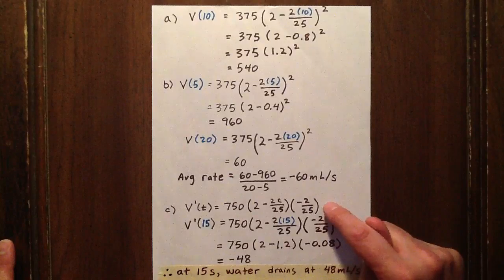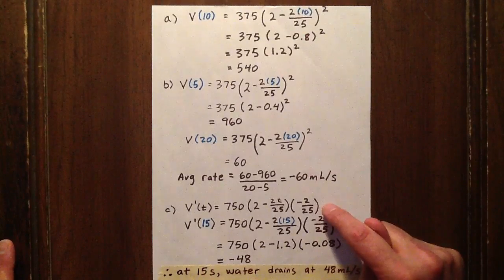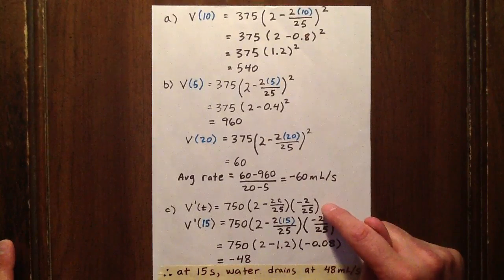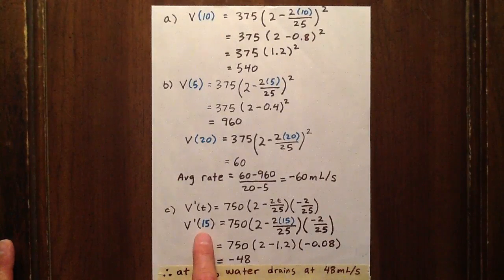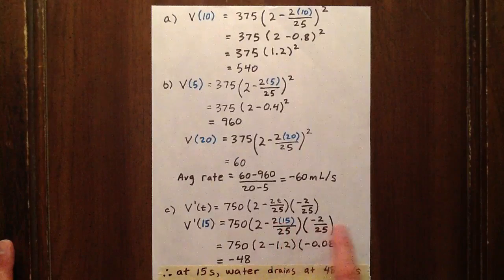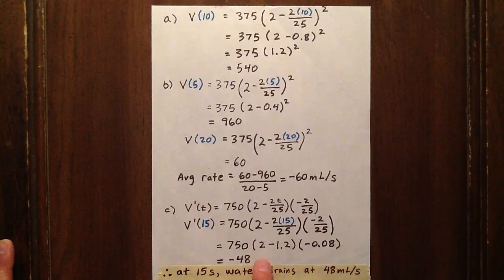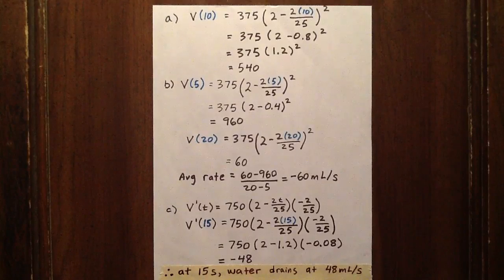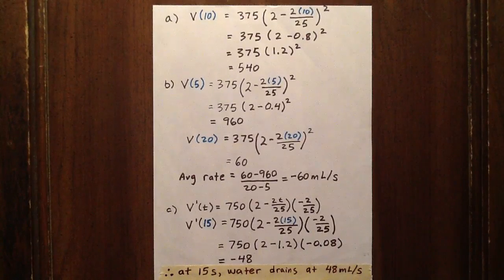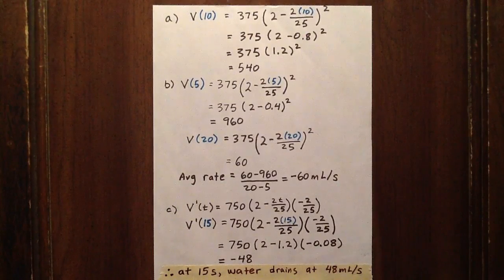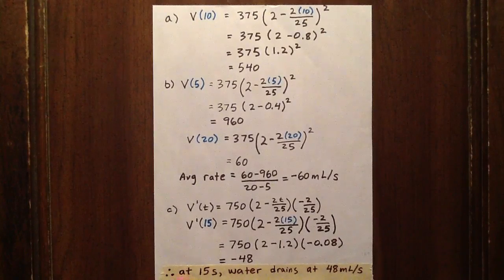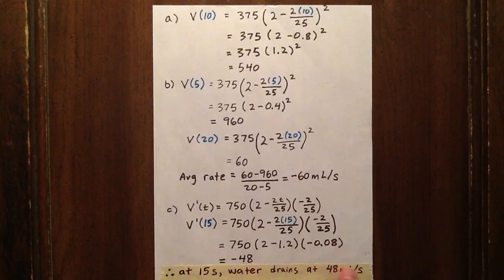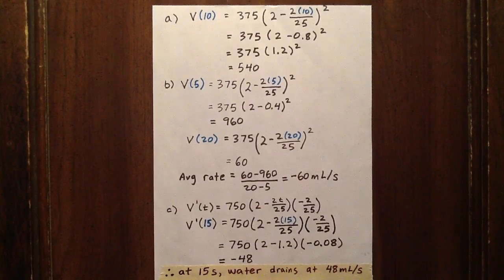Now, this is an expression to give us the instantaneous rate of change of velocity with respect to time at any given time. So we plug in a T value of 15, and we get negative 48. It makes sense that the derivative of velocity with respect to time is negative because the velocity is decreasing. So at 15 seconds, the water is draining from the cup at 48 milliliters per second.